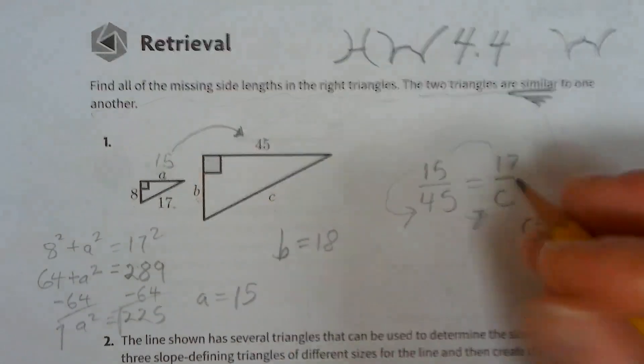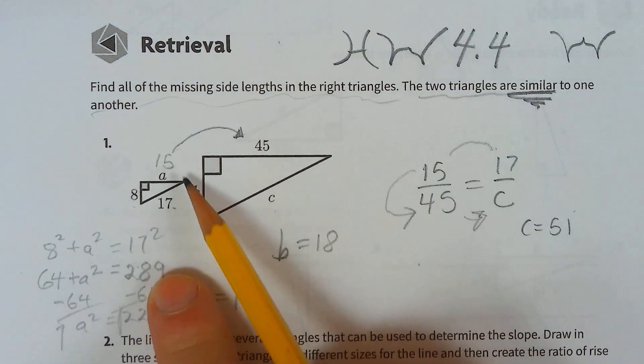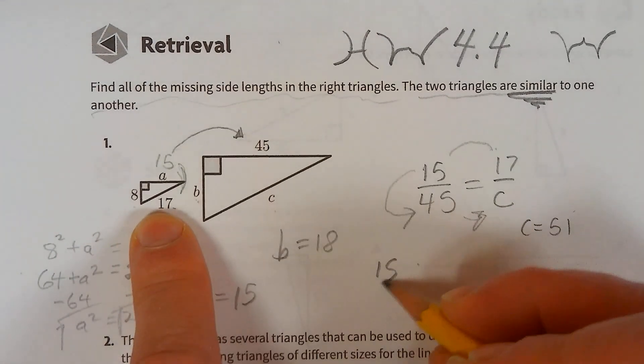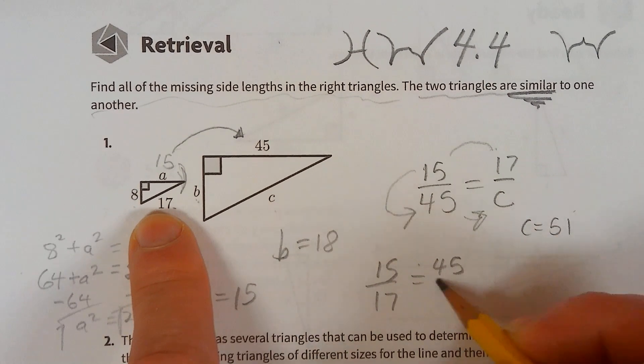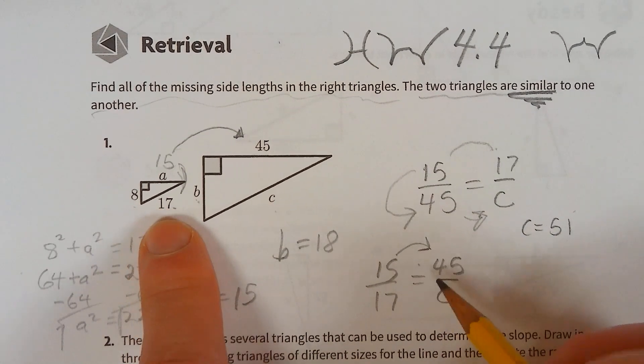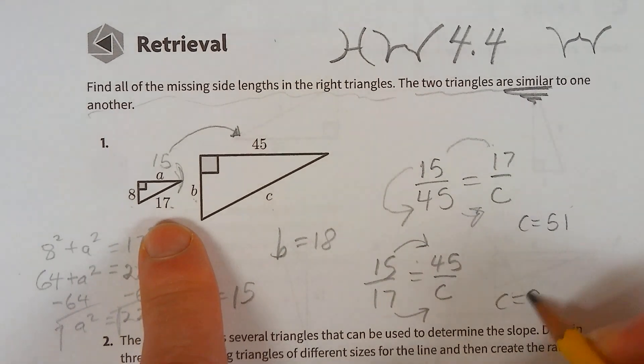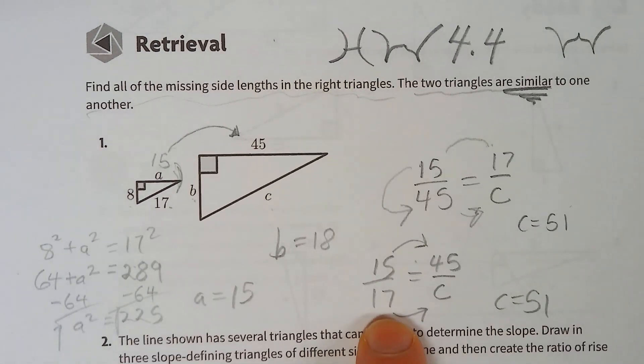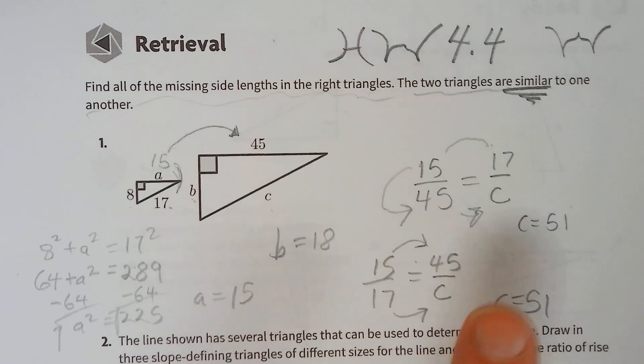Now let's set it up the easier way. Remember, it also works to compare two sides on one triangle with the same two sides on the other triangle. This would have been smarter to do because now we can see this is just times 3. And 17 times 3 is 51. So that's 10 times 3 is 30, 7 times 3 is 21, 30 plus 21 is 51.